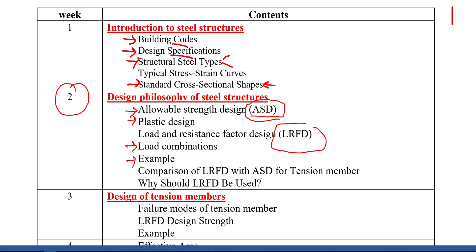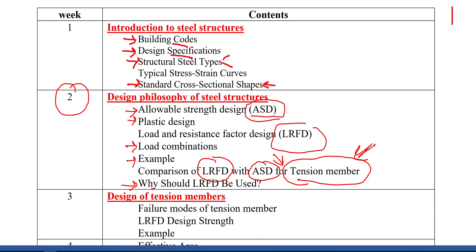The comparison will be between LRFD versus ASD for tension members, so we can see how the design philosophy affects the design. You'll understand the differences between LRFD and ASD regarding tension members — which is more economical, which gives a thicker element, which gives less safety factor. At the end, I'll give hints about why LRFD is preferred and why most design codes and textbooks are highly concerned with LRFD.